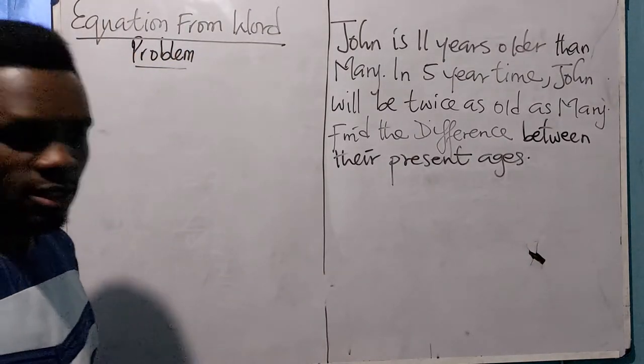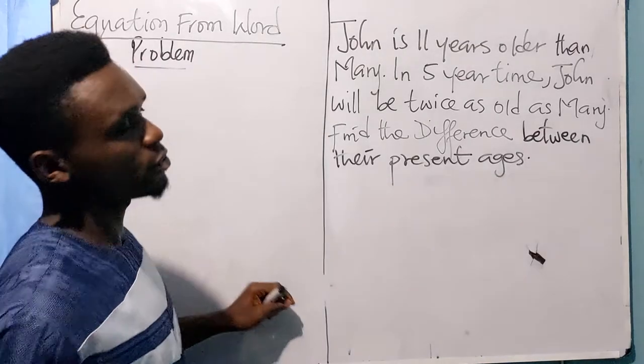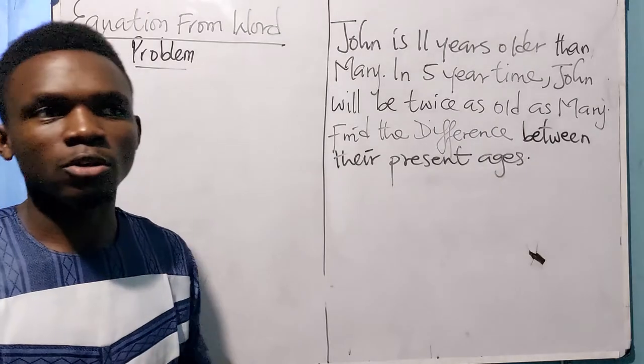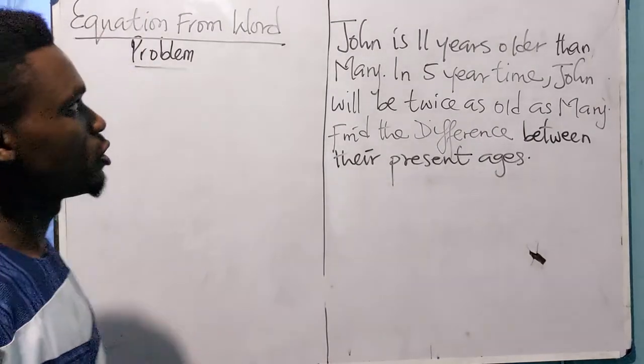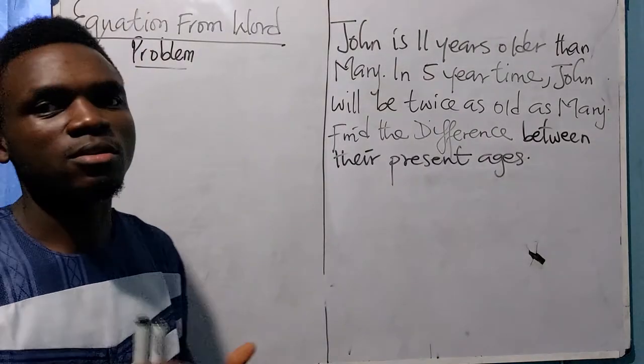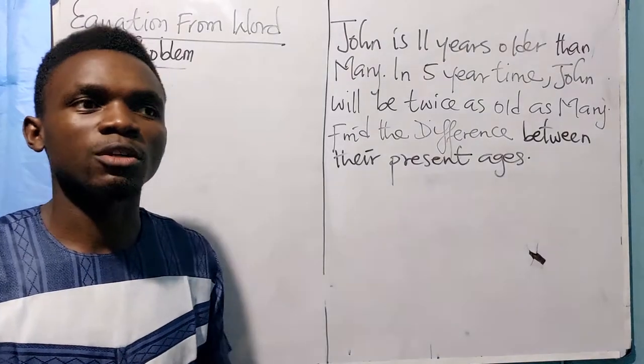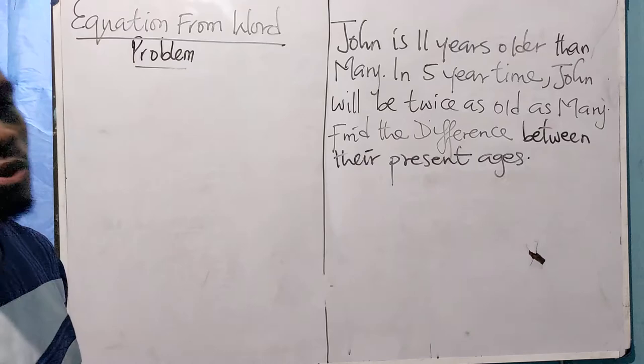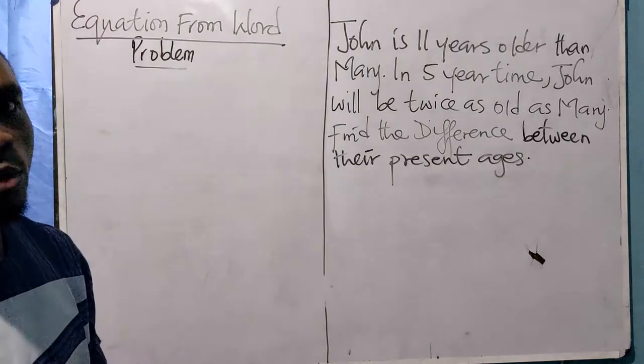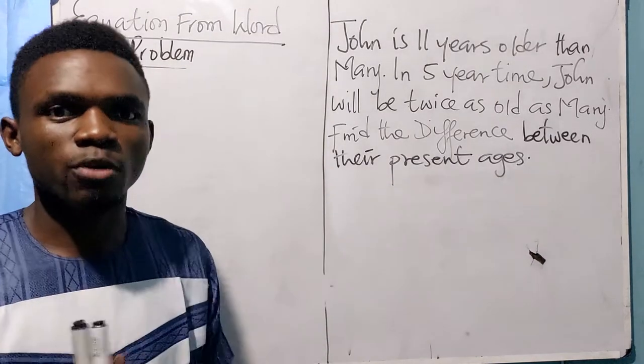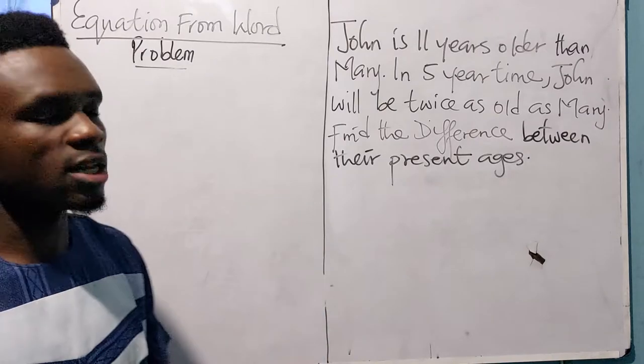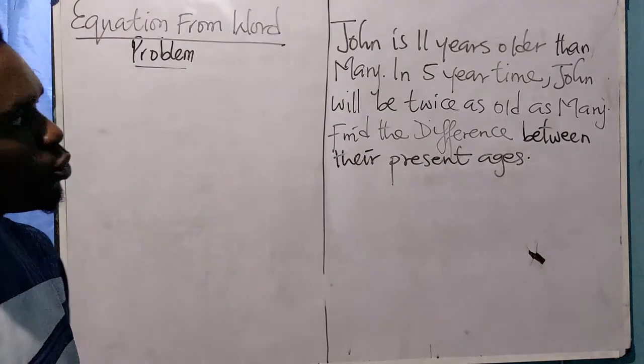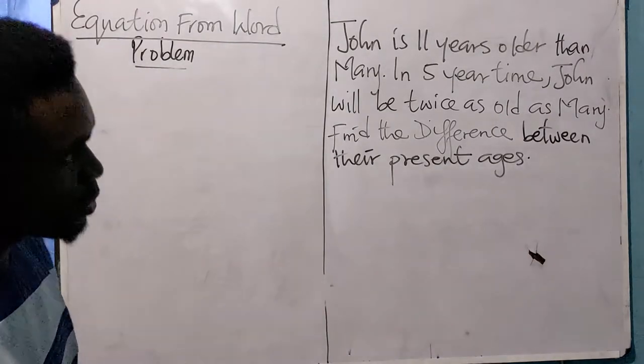I've treated word problems leading to quadratic equations in many videos uploaded so far. Please keep subscribing for more videos on various science topics. Now you have on the board a question we are to solve together: John is 11 years older than Mary. In five years time, John will be twice as old as Mary. Find the difference between their present ages.